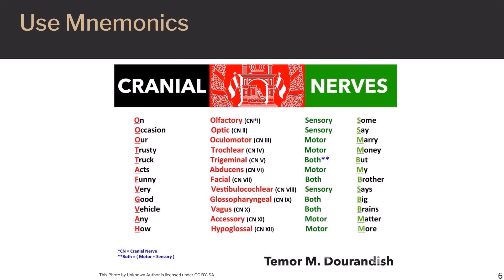The mnemonics depicted on this page can help students remember the cranial nerves and which ones are sensory, motor, or both. For cranial, we have, on occasion, our trusty truck acts funny, very good vehicle anyhow. For the olfactory, optic, oculomotor, trochlear nerve, trigeminal nerve, abducens, facial, vestibulocochlear nerve, glossopharyngeal nerve, vagus nerve, accessory, and hypoglossal nerve.